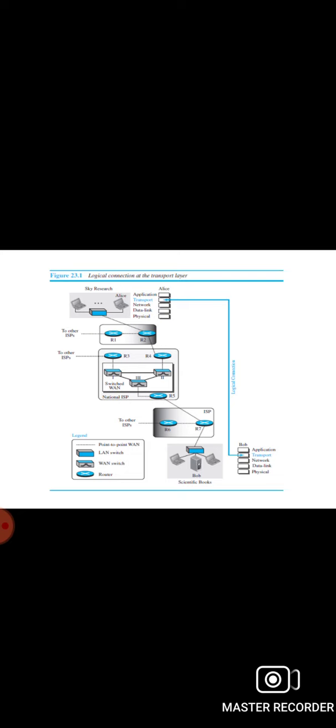Although there are several ways to achieve process-to-process communication, the most common one is through the client-server paradigm. A process on the local host called a client needs service from a process, usually on the remote host, called a server. Both client and server processes have the same name, which we'll see in this diagram.